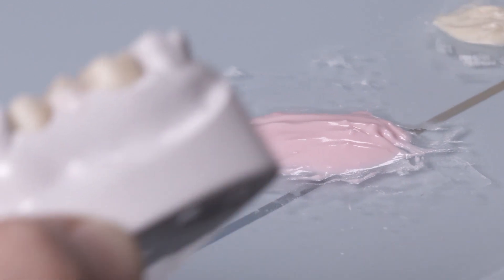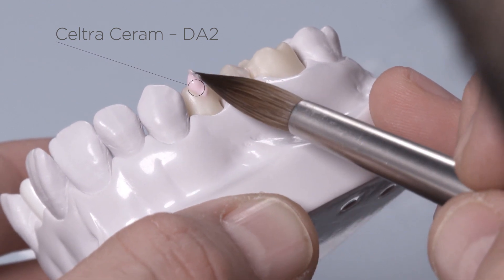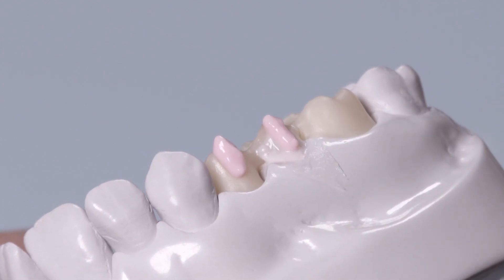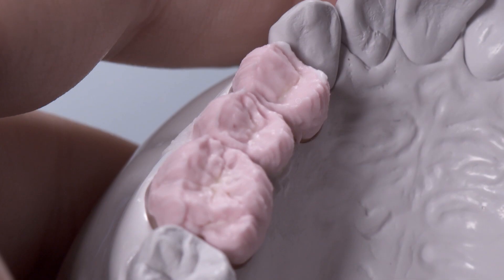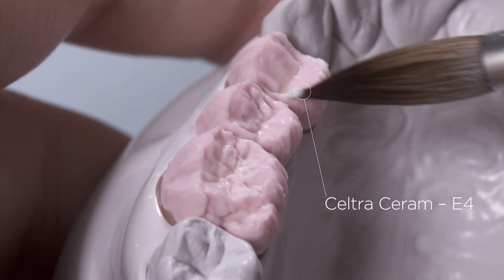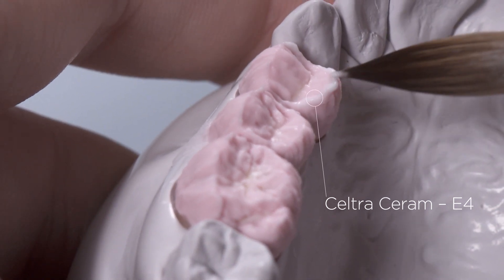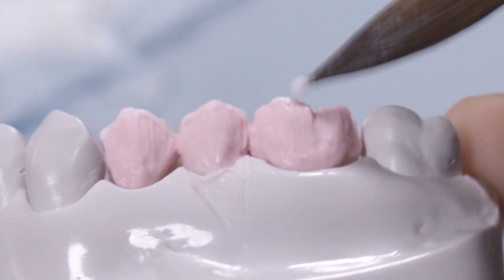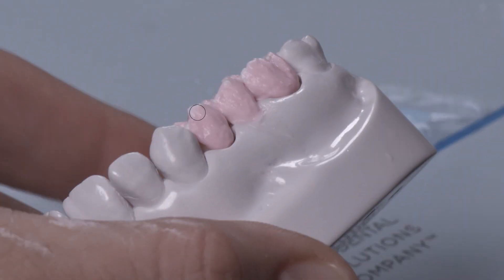Place Dentin Effect DE9 Orange in the central occlusal areas of the restoration. Then build up the buccal, labial and occlusal dentin aspects with Dentin A2. The ridges of the occlusal surfaces are emphasized with Seltra Ceram Enamel E4. This makes the occlusal surfaces appear extra vivid in the most translucent areas. Complete the build up with Enamel E1.